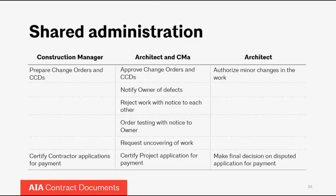The construction manager is often tasked with preparing change orders or construction change directives. Both the architect and the CM are going to have approval responsibility for change orders or construction change directives. There is also a whole host of things the architect and the CM share responsibility for — like notifying the owner if they discover defects, rejecting work, ordering testing, and even demanding that certain work be uncovered if there is some question about its adequacy.